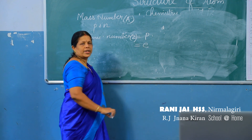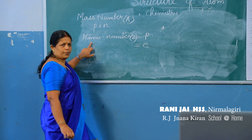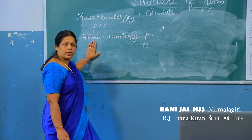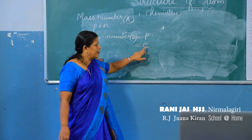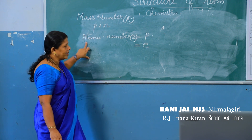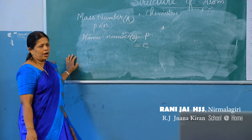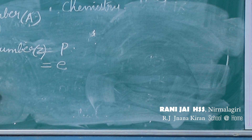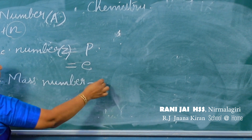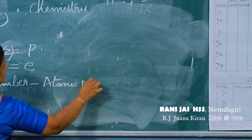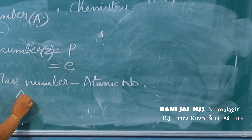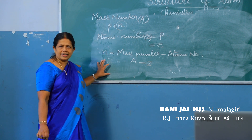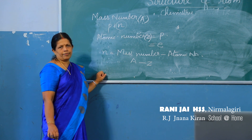In an atom, the number of protons equals the number of electrons. If you know the mass number and atomic number, you can find the number of each subatomic particle. The number of neutrons equals mass number minus atomic number, that is A minus Z.